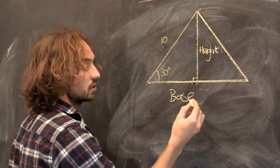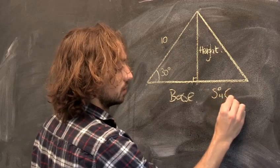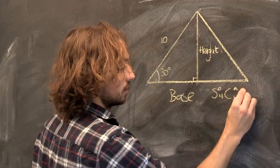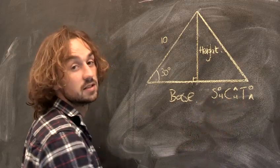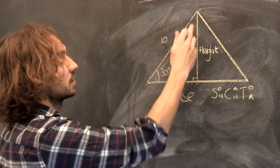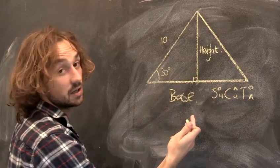Now using trigonometry, at school they should teach you this. SOHCAHTOA. This means sine, cos and tan. This is using trigonometry. So you can find this height here using sine.